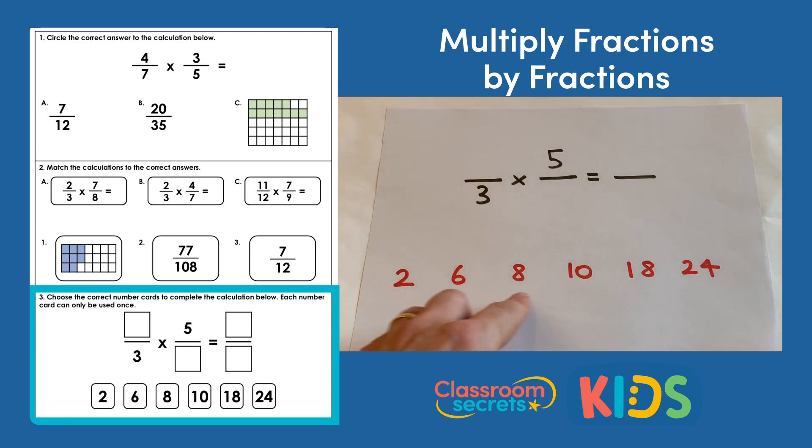We've got some missing numerators and denominators and both numerator and denominator missing in the result. We have the number cards 2, 6, 8, 10, 18, and 24. First of all, when you look at this, there are some ways you can work out what the numbers are going to be by thinking about some number facts.